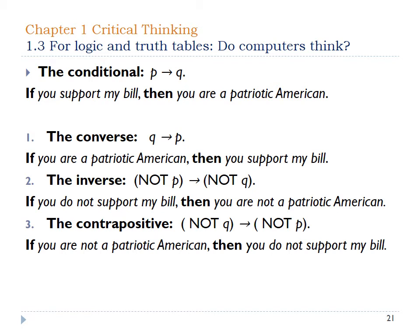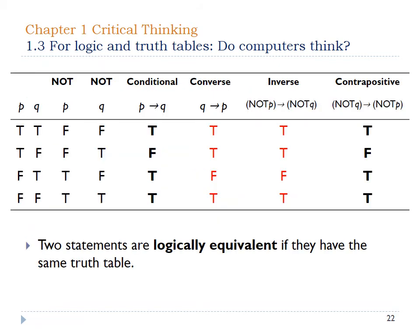As you can see, we actually talk a lot like this — switching things around, adding nots. Sometimes it's used to confuse people or cloud the truth. Looking at the logic table and focusing on the highlighted pieces: the converse and the inverse are exactly the same — they're logically equivalent. Switch them around or do the nots of each case, and you get the exact same truth table. Also, the conditional and the contrapositive are also the same. It's like the double negative — take the double negative and you end up with the same thing.